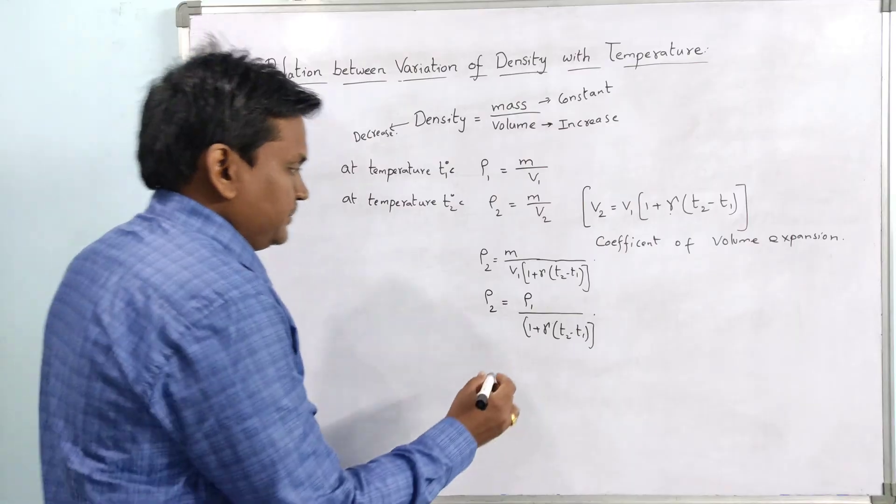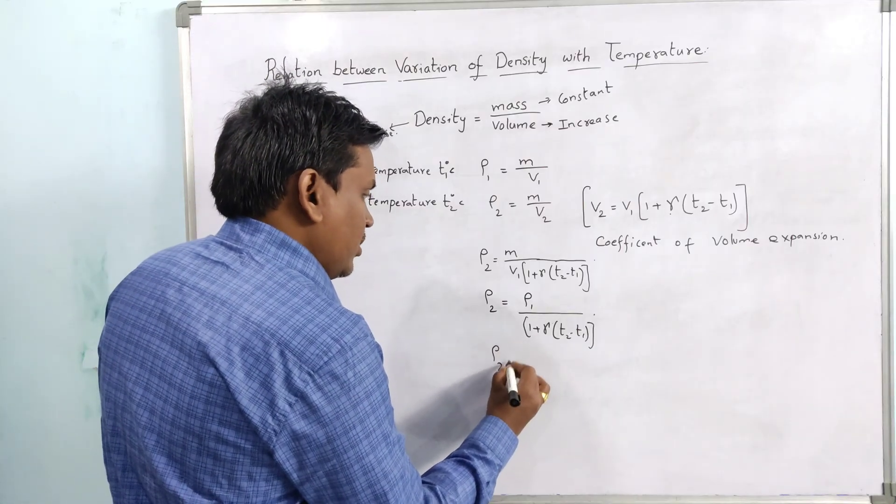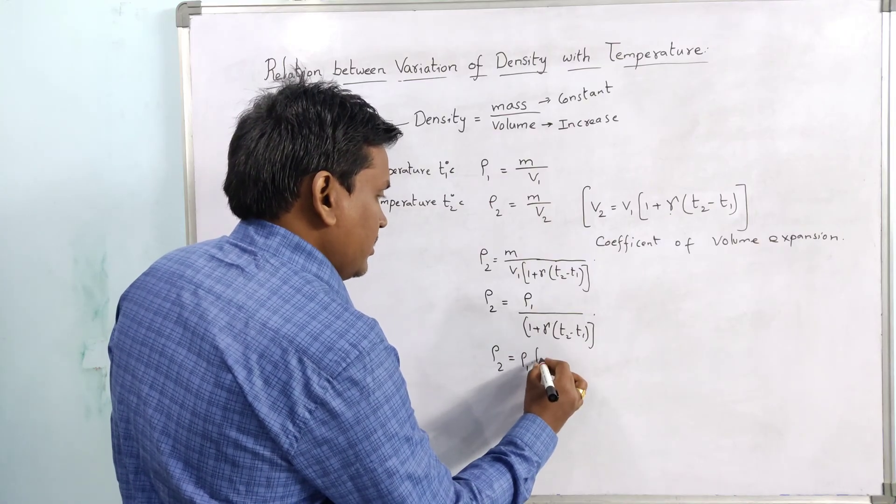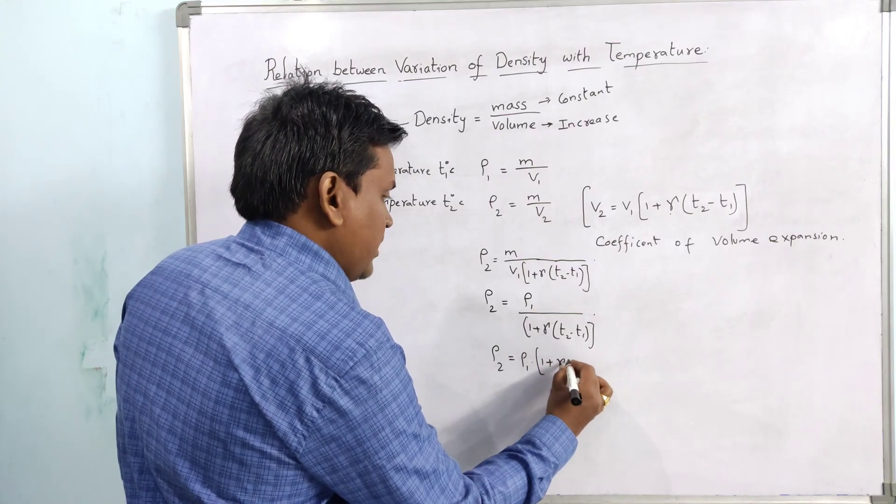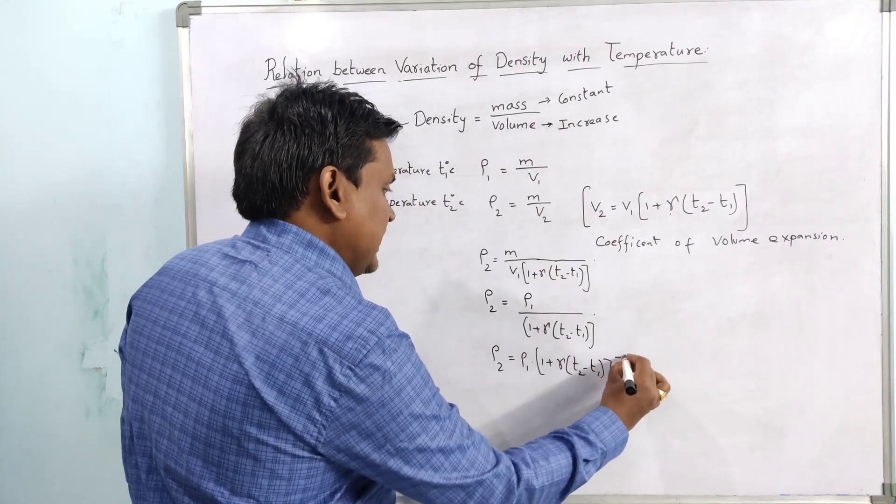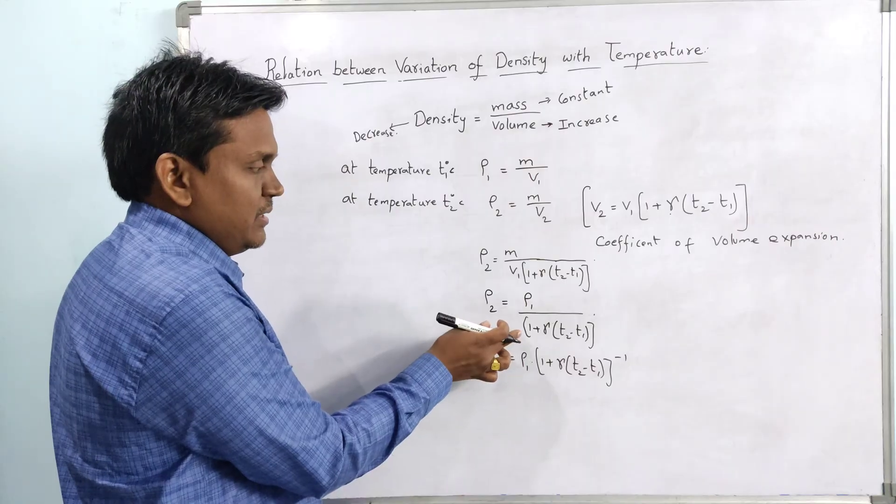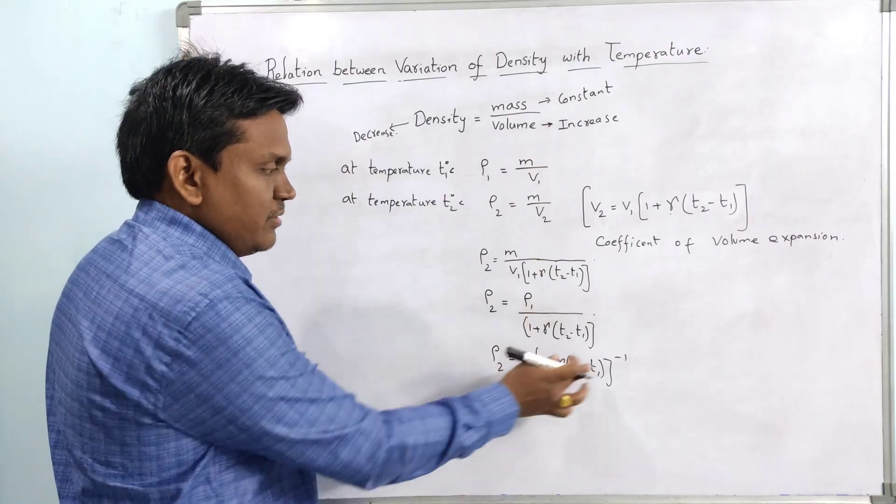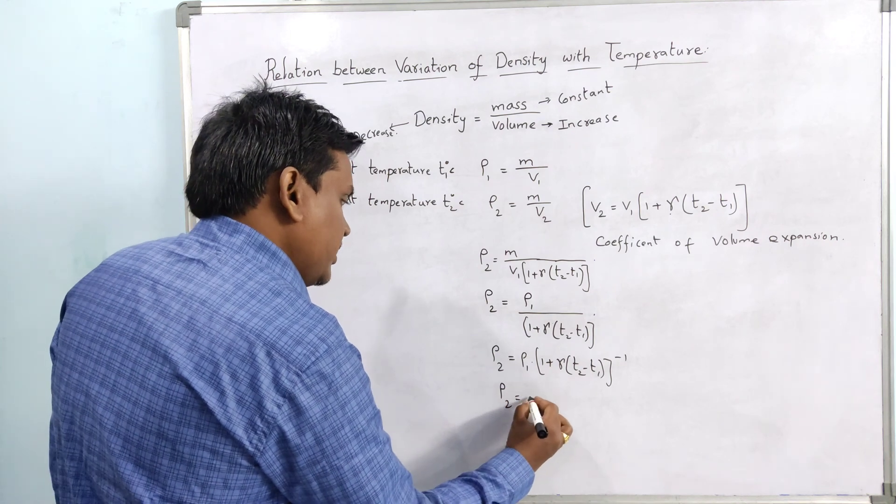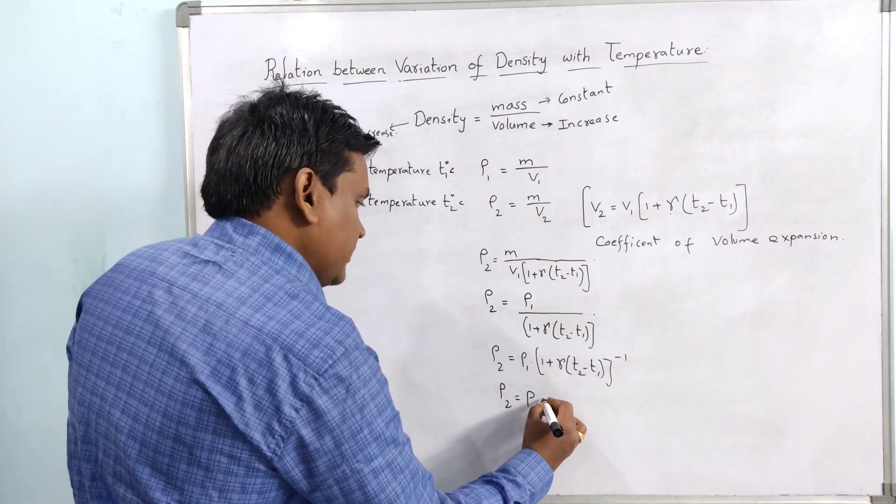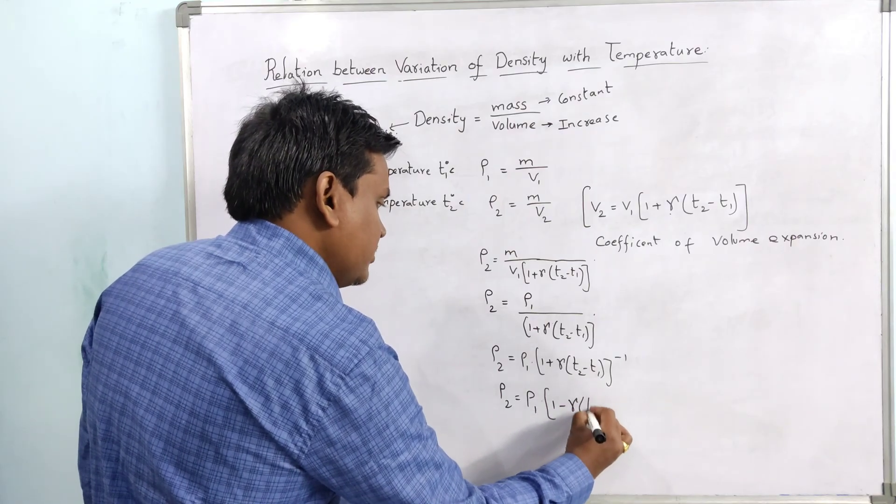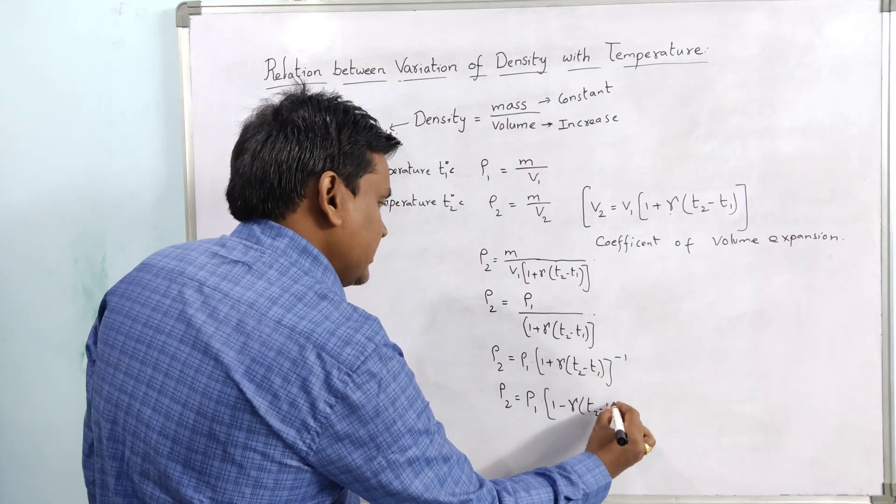This can be written as rho 2 equal to rho 1 into 1 plus gamma into T2 minus T1 inverse. This is in denominator; if it comes to numerator it will be inverse. Or this can be written as rho 2 equal to rho 1 into 1 minus gamma into T2 minus T1.